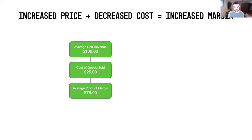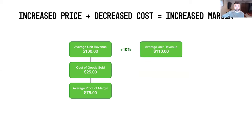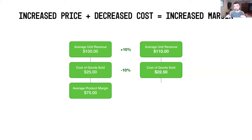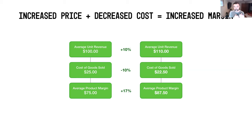Now let's look at what both scenarios combined look like. If we decrease cost of goods sold and increase price at the same time — using those same 10% numbers — your average unit revenue goes up to $110 and your cost of goods drops to $22.50. Combining those two, your average product margin increases to $87.50, which is a 17% increase. By simultaneously raising your top line and reducing your costs, you significantly grow your overall product margin.